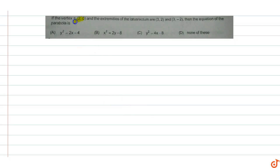In this question, the vertex is (2,0) and the extremities of the latus rectum are (3,2) and (3,-2). We need to find the equation of the parabola. We let (2,0) be the vertex and (3,2) and (3,-2) are the extremities of the latus rectum.